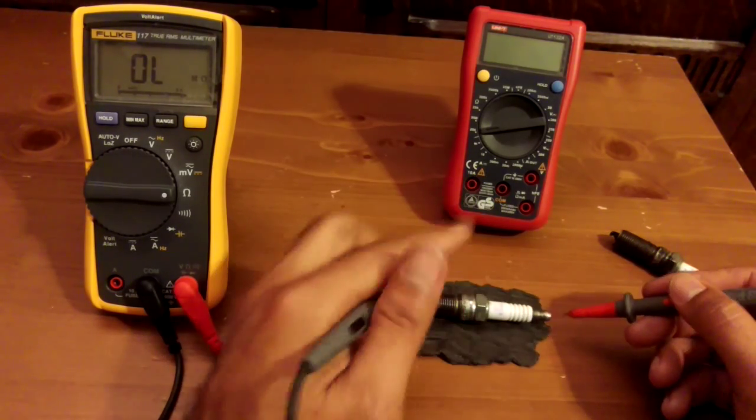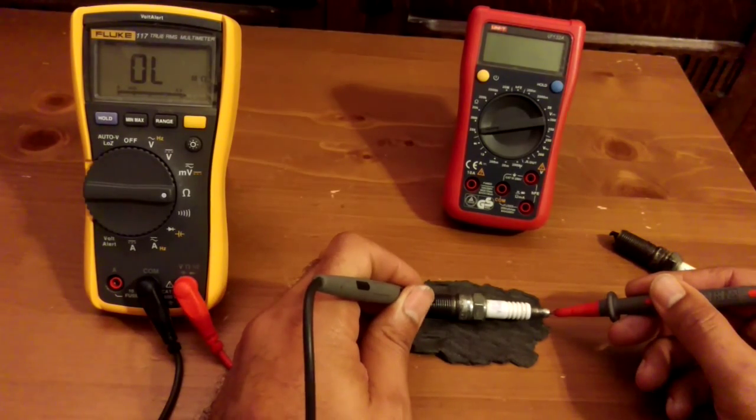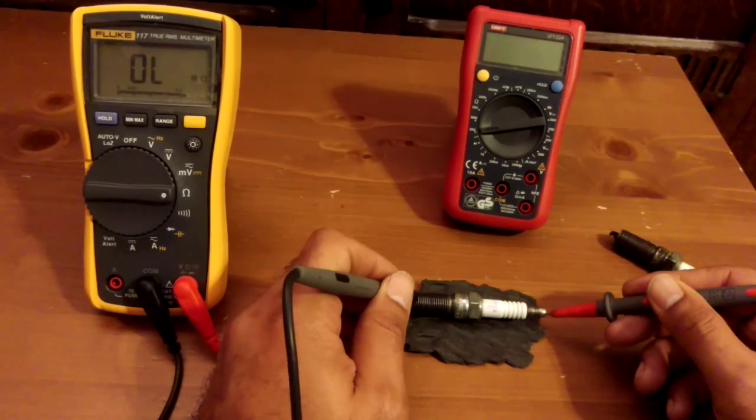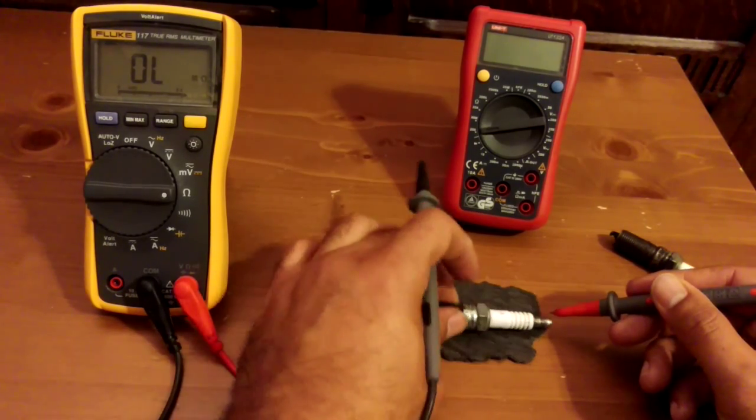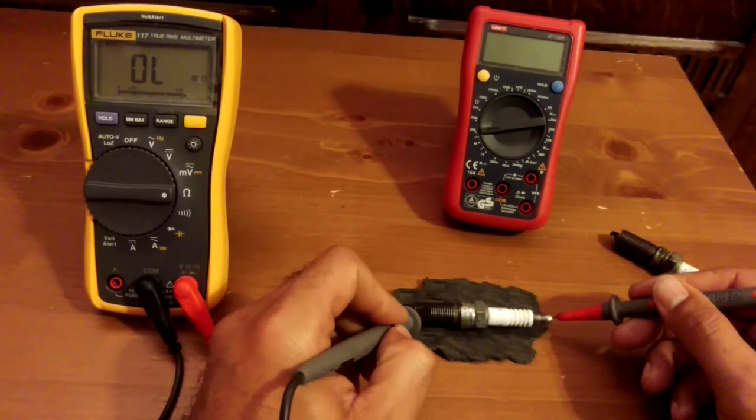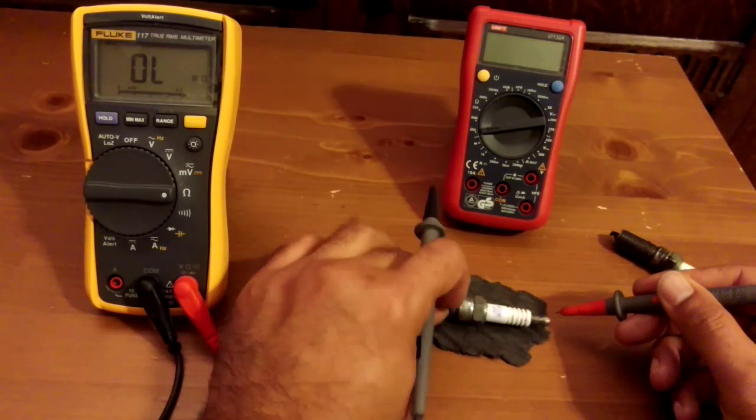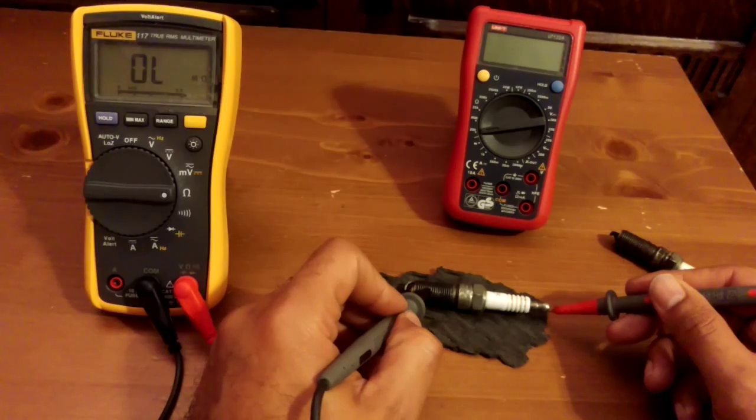Keep it on the live side and just keep checking lots of different parts of the ground side. Turn the spark plug around. You're looking for that zero reading all the time. Well, it's not a zero reading, it's an overload reading, it's a huge reading that you're looking for. All of these will be over 60 megaohms and that's exactly what we're looking for.